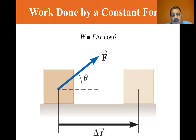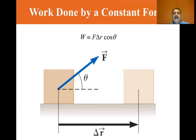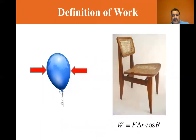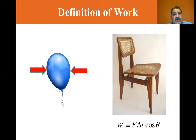If the force is applied to a particle or a rigid object that can be modeled as a particle, then the displacement is the same as that of the particle. For deformable systems such as a balloon, if we compress a balloon, the displacements are not the same. Imagine pressing in on the sides of a balloon with both hands — the center of the balloon moves through zero displacement. The points of application of forces from your hands on the sides of the balloon move through a displacement as the balloon is compressed.